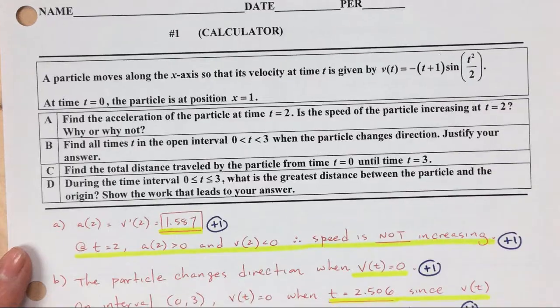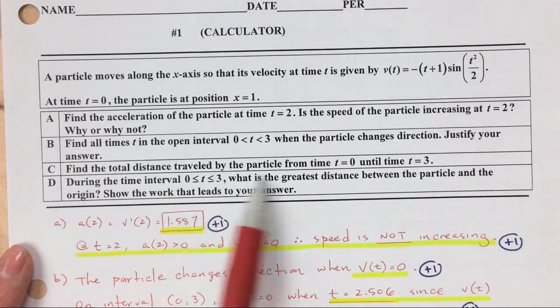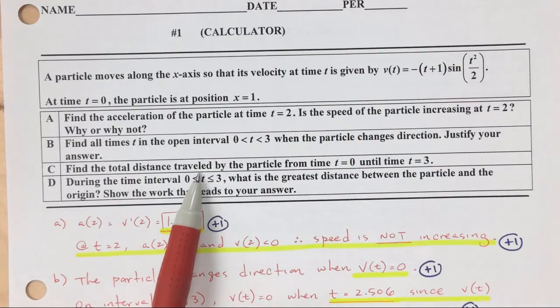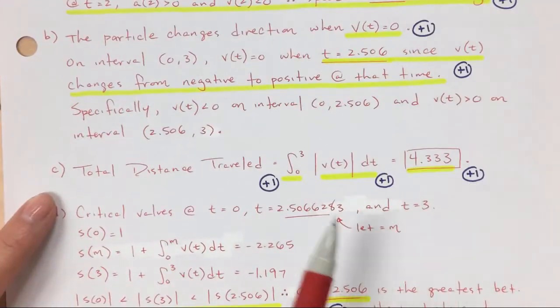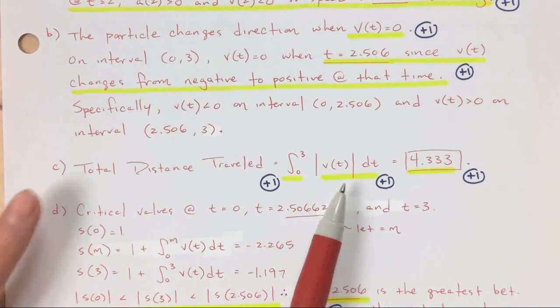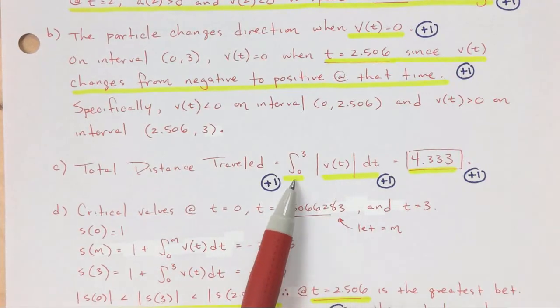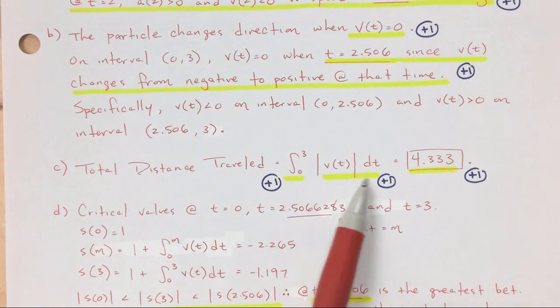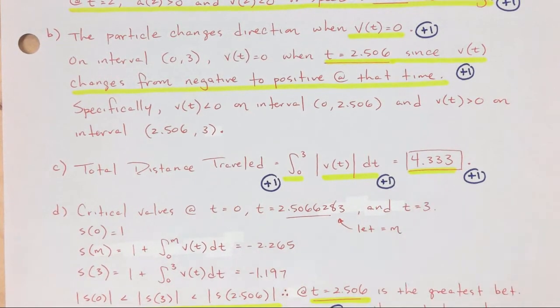Okay, c, find the total distance traveled by the particle from 0 to 3. Total distance traveled, that is going to be a bigger number than your position. So you are looking for your absolute value of your velocity. So from 0 to 3 is going to be one part, and then your absolute value of the velocity, plug it into your calculator, and then you get that as your answer. Make sure that you can do this. Make sure it's all okay like that on your calculator.